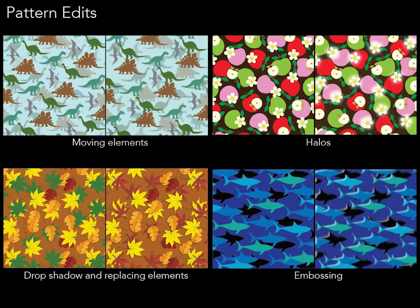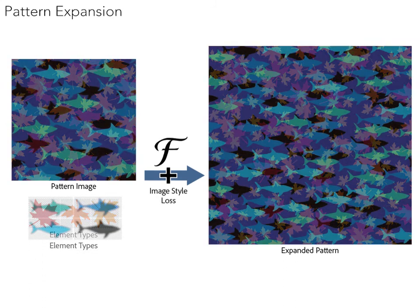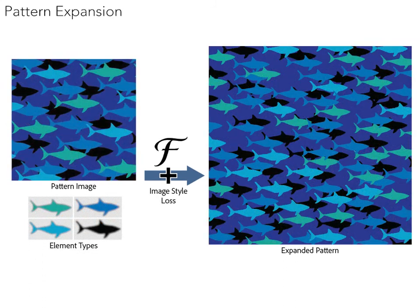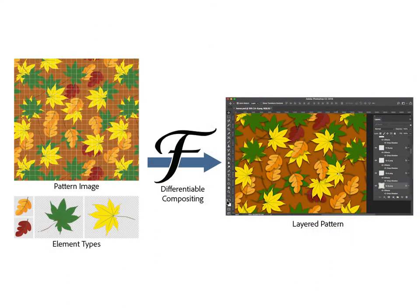Differentiable compositing also allows us to optimize for any image-based loss. For example, optimizing for an image style loss enables applications like pattern expansion. In summary, we've introduced a new differentiable compositing function that makes it possible to invert pattern images into editable, layered representations.